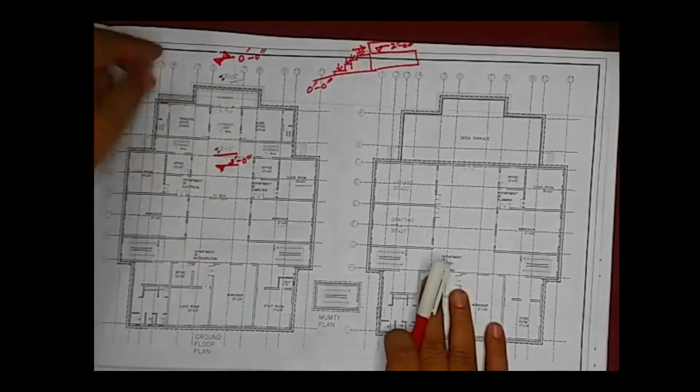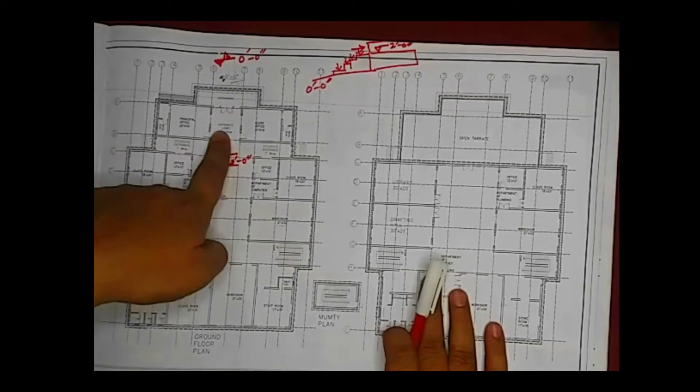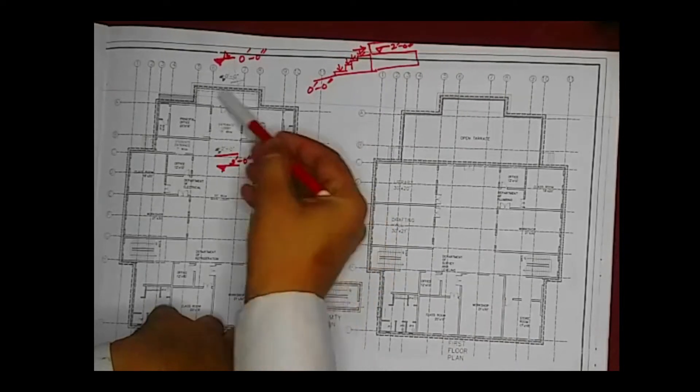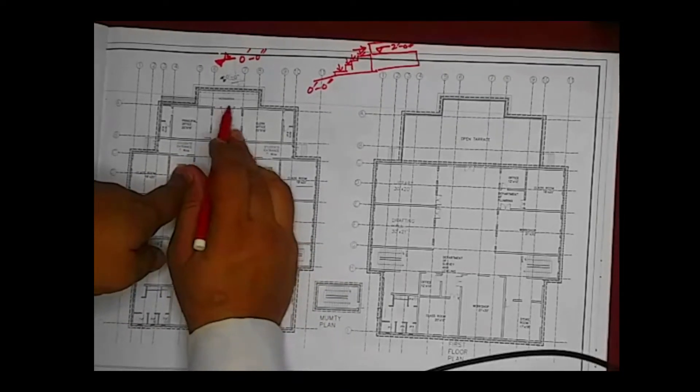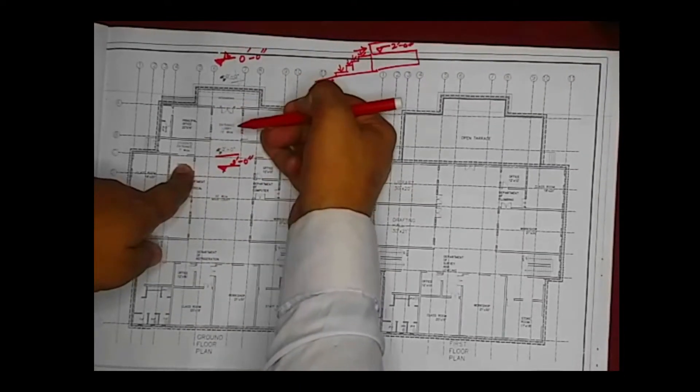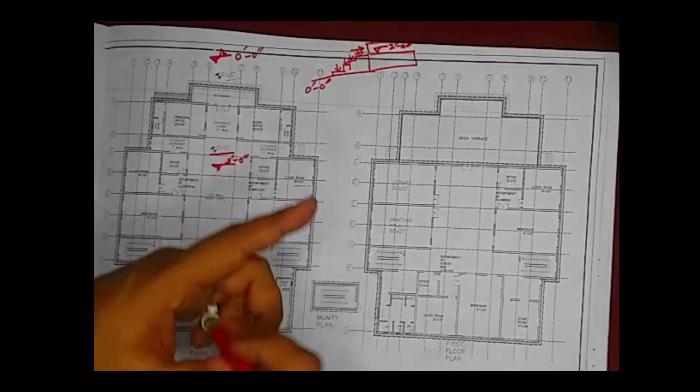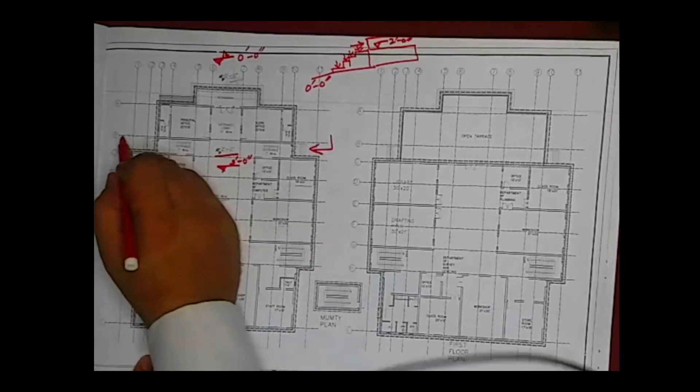This is the entrance of the building — the main gate. This area is the entrance lobby, which is 15 feet wide. The thickness of these walls is included in this 15 feet. On the left side is the principal's office, and this is the clerk's office. Students will enter from this side, this side, and this side.